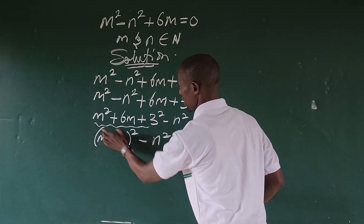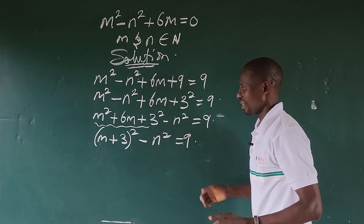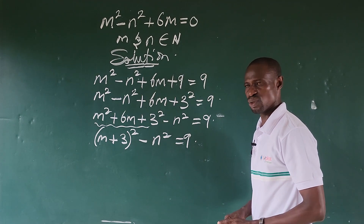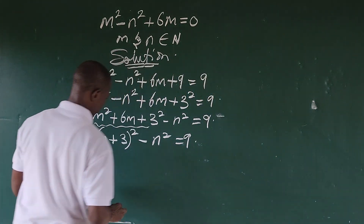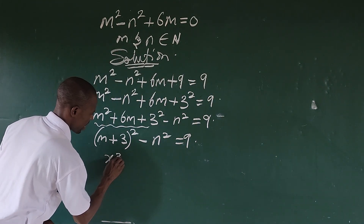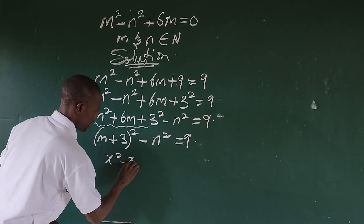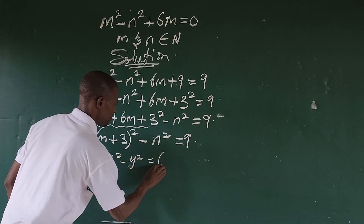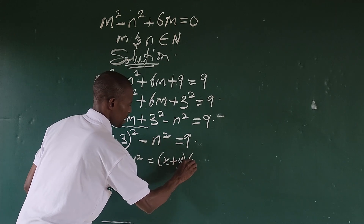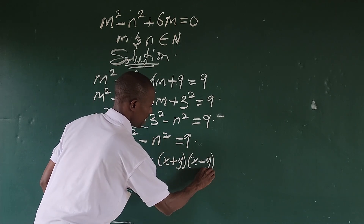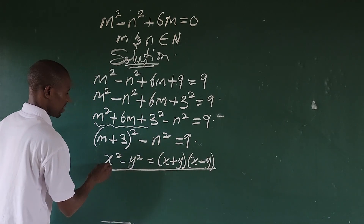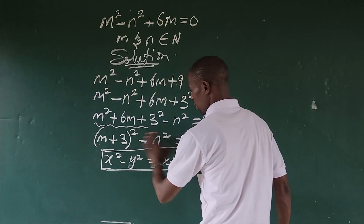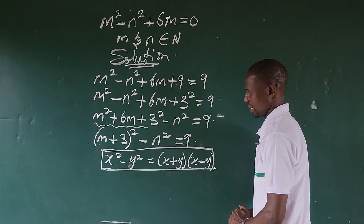Now what comes to mind is the difference of two squares identity: x² minus y² equals (x + y)(x − y). So we're going to rewrite our expression in this format, where x is (m + 3) and y is n.